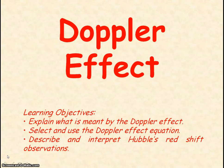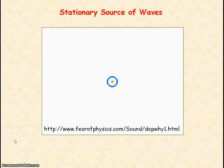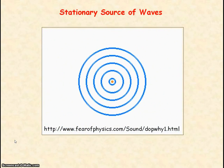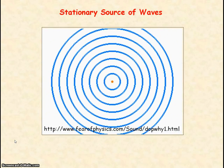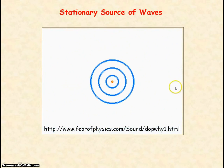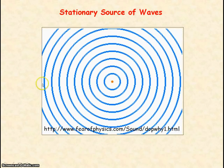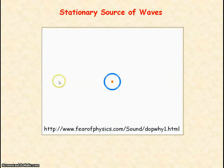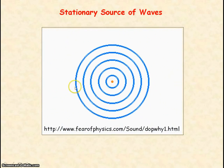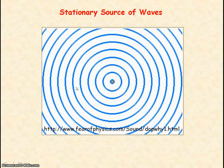We're going to be looking at the Doppler effect. Here we have a stationary source of waves emitting waves of frequency f, and an observer who is in front of the source of waves or behind the source of waves. They will detect the same frequency that is emitted by the source.